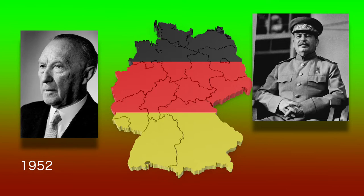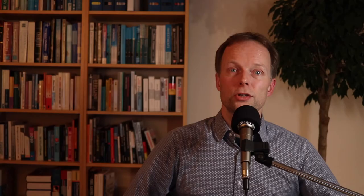On March 10th, 1952, Joseph Stalin issued a note to the Western allies in which he proposed a German unification. However, it did not come to an agreement as East and West did not want to accept each other's conditions.